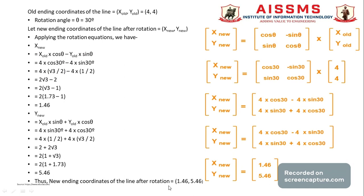This is how the calculation works when we apply rotation on a 2D plane. In matrix form: [X_new, Y_new] = [[cos θ, −sin θ], [sin θ, cos θ]] × [X_old, Y_old]. Substituting: cos(30°) = √3/2 and sin(30°) = 1/2, with X_old = 4 and Y_old = 4. After matrix multiplication, we get X_new = 1.46 and Y_new = 5.46, confirming the result after rotation in 2D transformation.